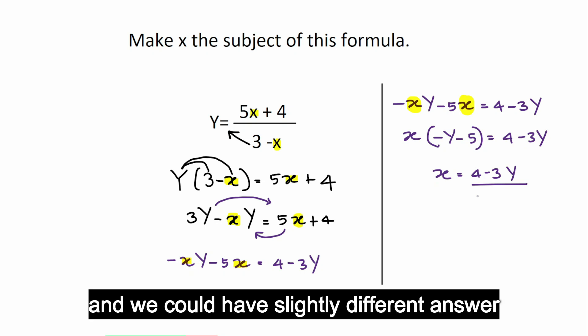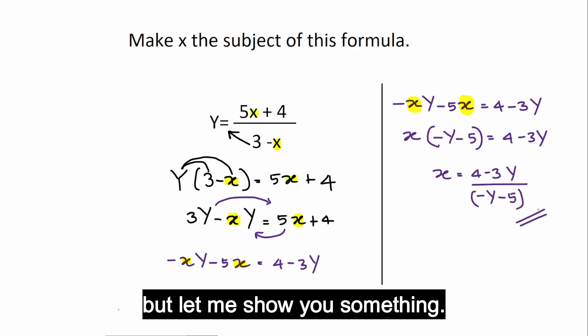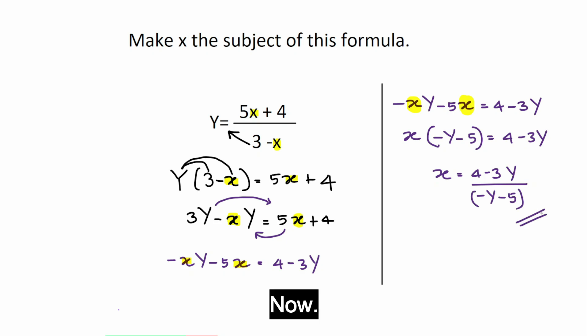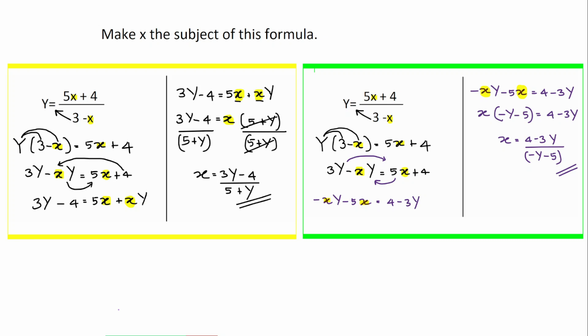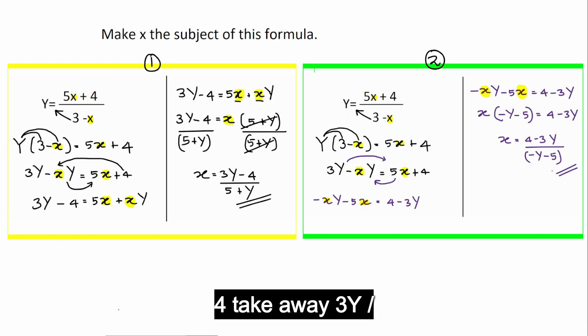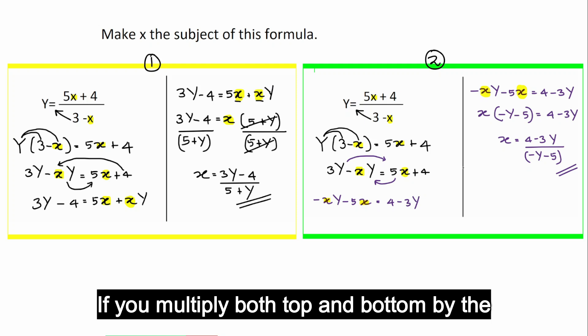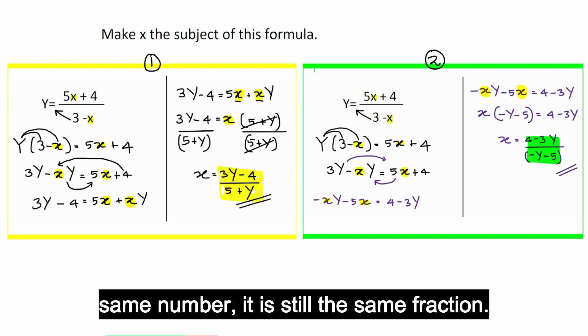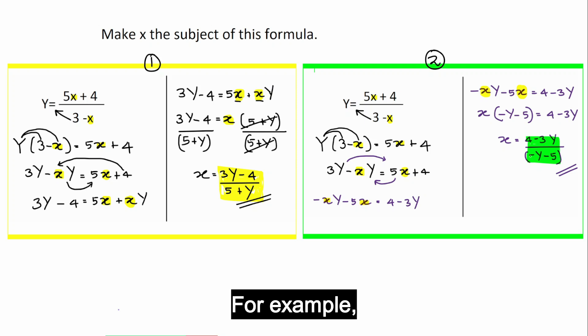So, this is the answer I get now and we could have slightly different answer earlier but let me show you something. Let's have a look at these two side by side. This is what we did as method 1. This is method 2. Here we got 3y take away 4 over 5 add y. Here we got 4 take away 3y over negative y take away 5. Let's see if they are the same. You know when you have a fraction, if you multiply both top and bottom by the same number, it is still the same fraction.